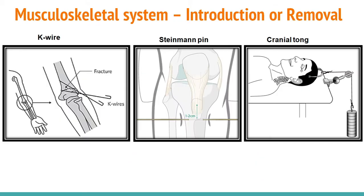The devices include K-wire, Steinmann pin, and cranial tongs. The physician will implant these devices on the defected area or fracture site of the patient. Now, how is the K-wire installed or inserted into the defected area or fracture site?